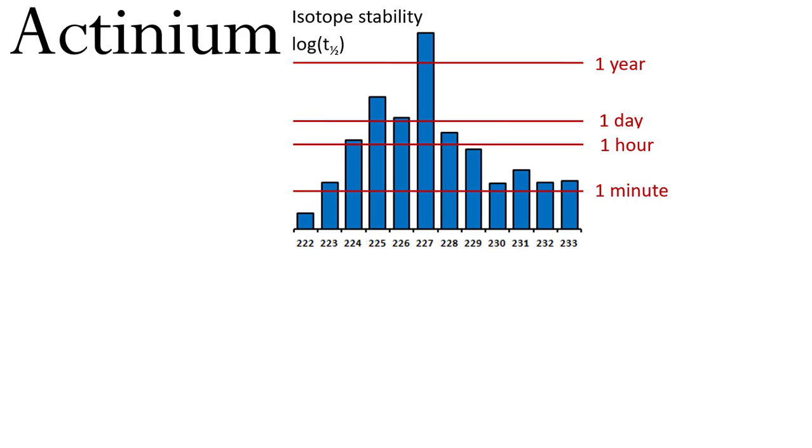In fact, for Actinium there are no long-lived isotopes. The most stable isotope of Actinium is Actinium-227, half-life 22 years.